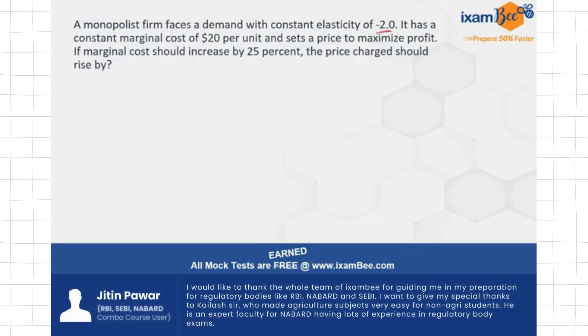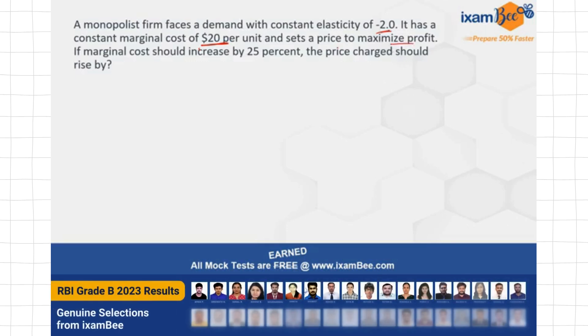It is also mentioned that it has a constant marginal cost of ₹20 per unit, and he sets a price to maximize its profit. Because he's a monopolist, he wants to maximize his profits.